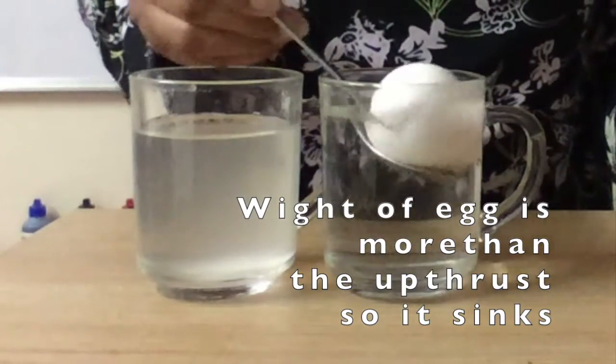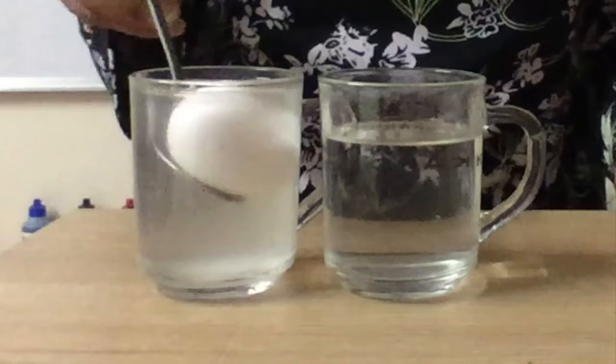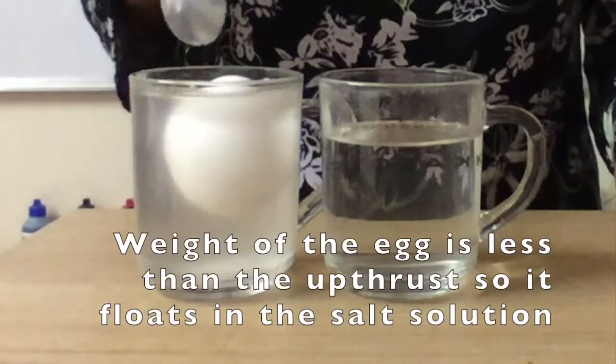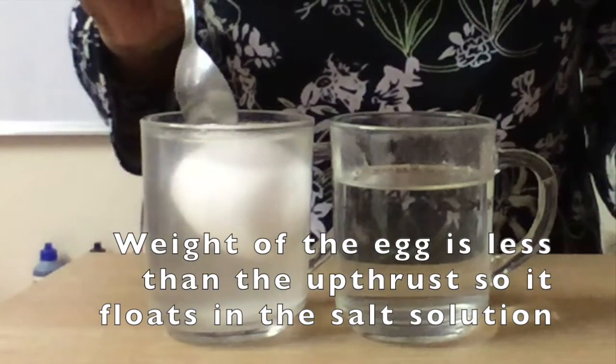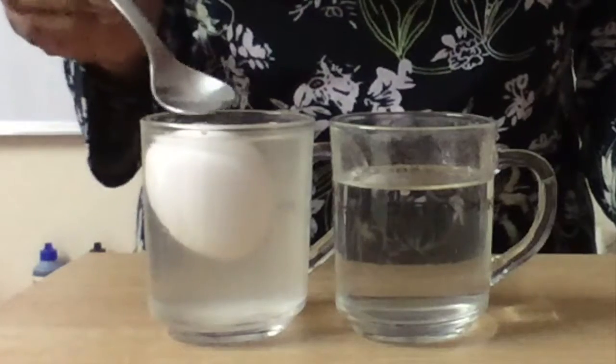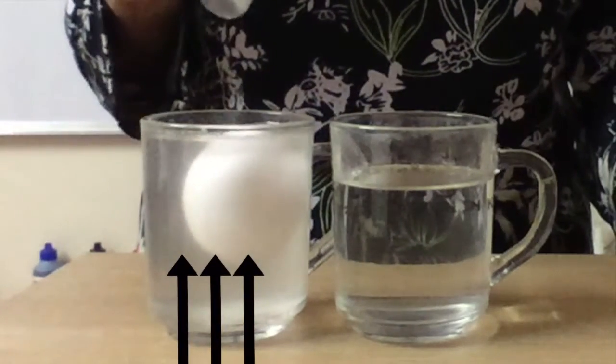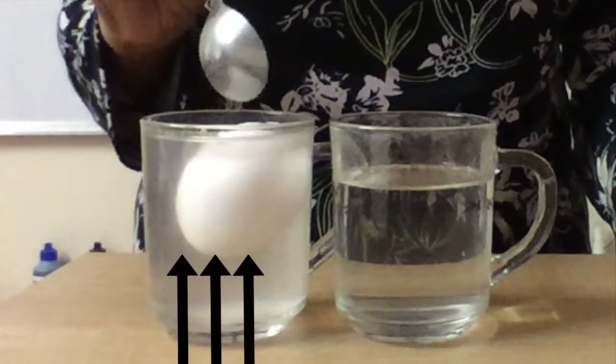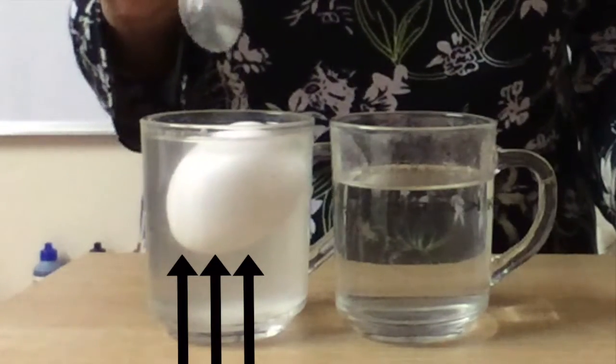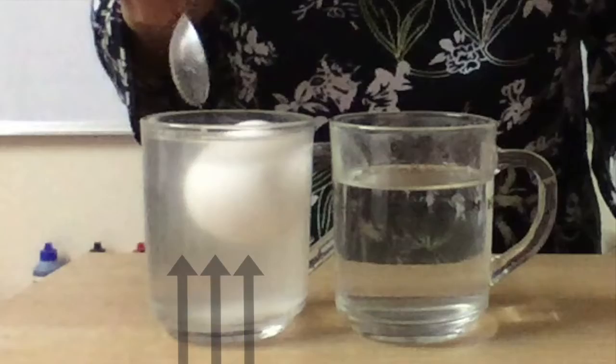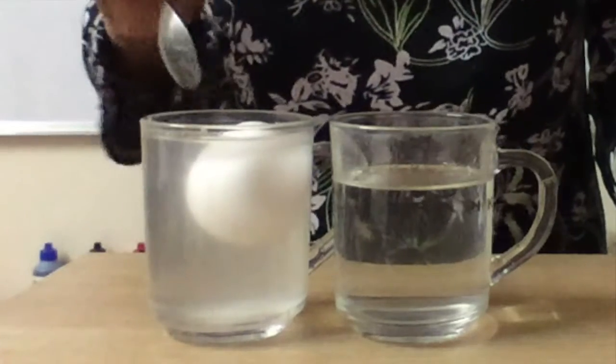And now here we will have the weight of the egg is less than the upthrust. The maximum upthrust is this. Now when it is in floating position, part of this egg is above the liquid. So the immersed volume of the egg is slightly less than the entire volume.